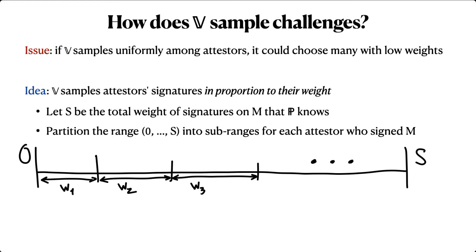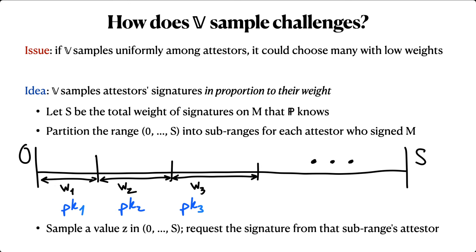Pictorially, we have the range 0 to S divided into segments whose length corresponds to the weights of the attesters. Now the verifier can sample a value Z in the range 0 to S and request the signature that corresponds to the attester whose sub-range Z falls into.